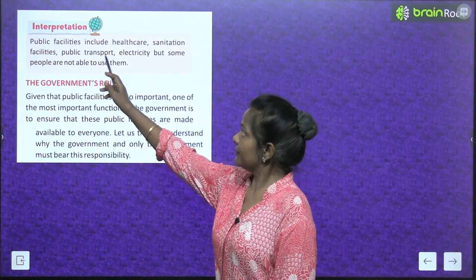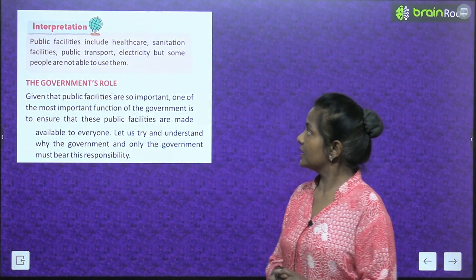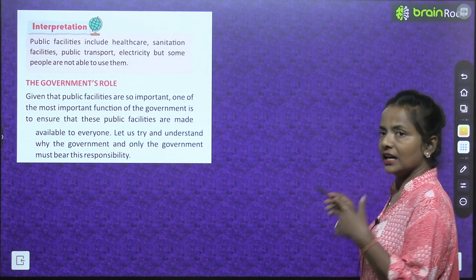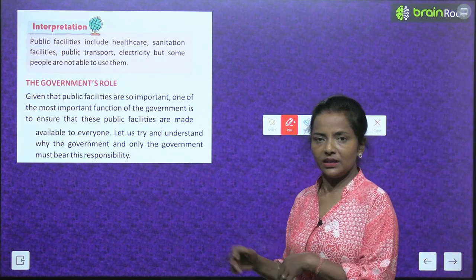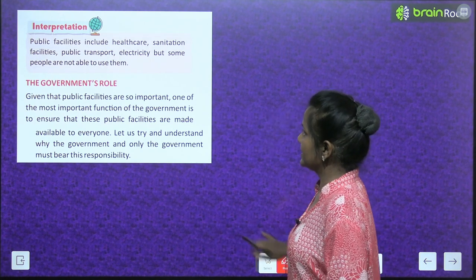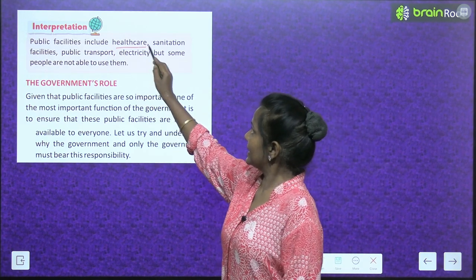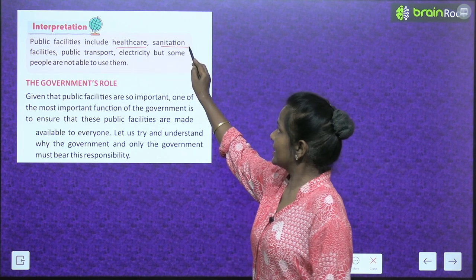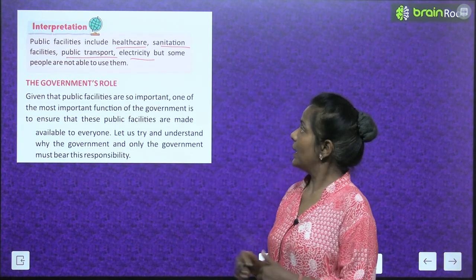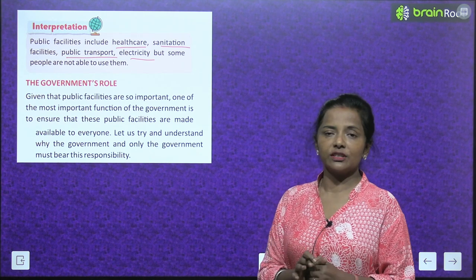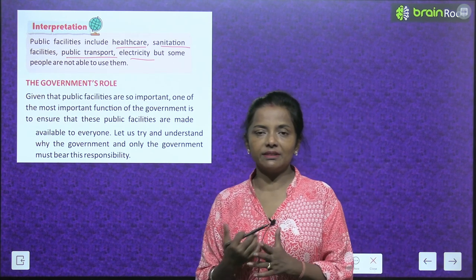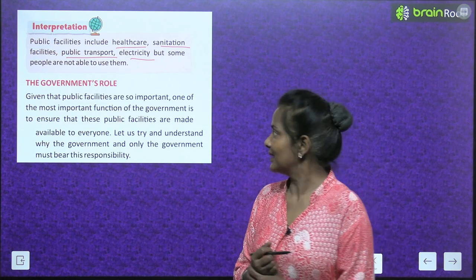Public facilities include health care. Ab dekheye, public facilities mein kya kya cheeze aati hain. Ek question poocha gaya tha shuru mein ki list out the public facilities. These are the public facilities: health care, sanitation facilities, public transport, electricity. But some people are not able to use them — lekin abhi bhi kuch log is public facility ka use nahi kar paate hain.